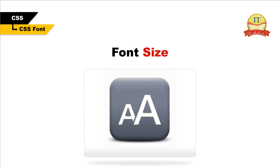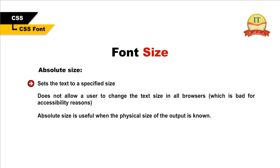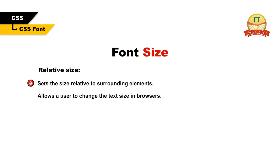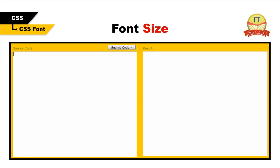The font-size property sets the size of the text. However, never use font size adjustments to make paragraphs look like headings or headings look like paragraphs — always use the proper HTML tags like h1 to h6 for headings and the paragraph tag for paragraphs. The font size value can be absolute or relative. Absolute size sets the text to a specified size and does not allow a user to change the text size in all browsers. Relative size sets the size relative to surrounding elements and allows a user to change the text size in browsers. The default size for normal text is 16 pixels.